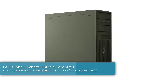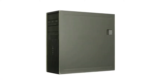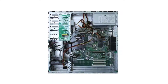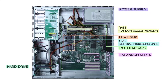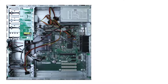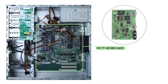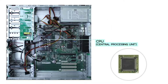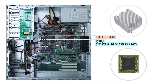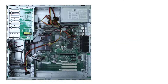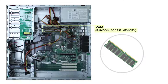You may already know there are a lot of important parts inside a desktop computer, but what exactly do they do? Every computer has a large circuit board called a motherboard. This contains some of the most important parts of your computer, such as the CPU — also called the central processing unit or processor. The CPU is sometimes called the brain of the computer because it processes information and carries out commands. The motherboard also contains your computer's RAM, or random access memory, which is the short-term memory your computer uses whenever it's performing calculations.